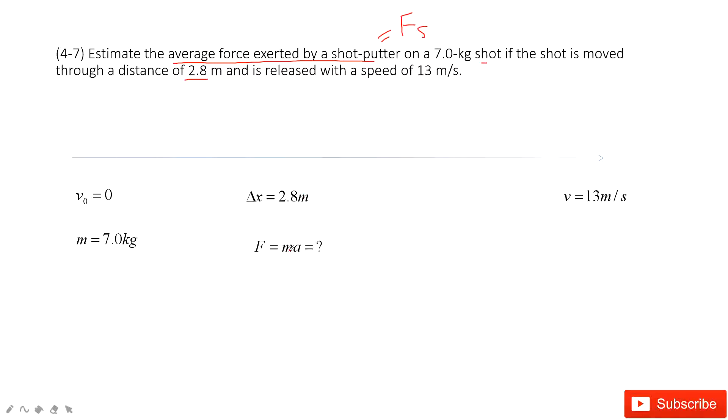And then we can see, can we find this force? Yes. So this force equals mass times acceleration. This mass is the mass of the shot. And also acceleration, we know initial velocity, we know final velocity, and we know displacement. Super easy, we can get the acceleration for this shot.